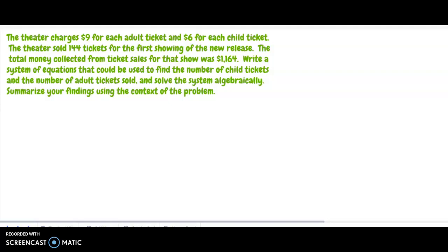Okay, so once again we're just going to set this up. We're going to use a for adults and c for child. So I'm going to have 9a plus 6c equals 1164, where 9 dollars is for adults and 6 dollars is for child. Now we also know that a plus c equals 144.